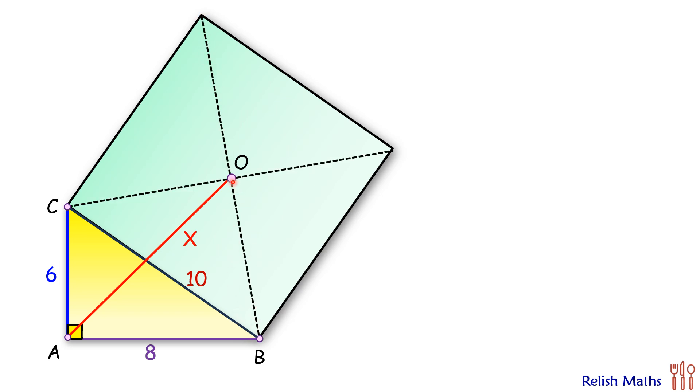And of course they will intersect at the center of the square. Now we know that if the side length of the square is 10 cm, then the length of its diagonal will be 10 root 2. And half of it, that is OB, will be 5 root 2 cm. Same way, OC will be 5 root 2 cm.